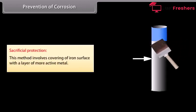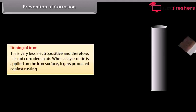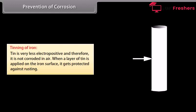Tin plating of iron: Tin is very less electropositive and therefore it is not corroded in air. When a layer of tin is applied on the iron surface, it gets protected against rusting.